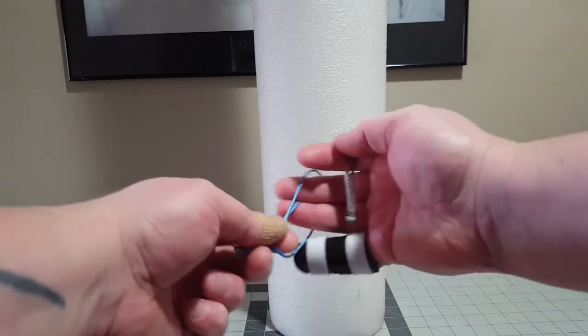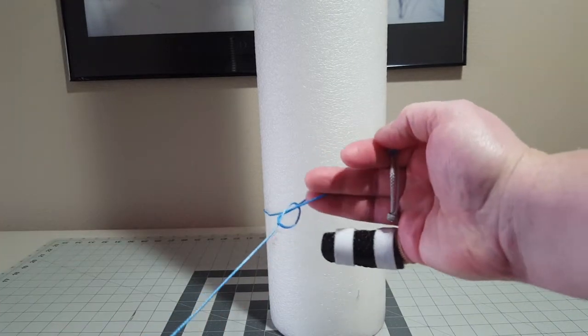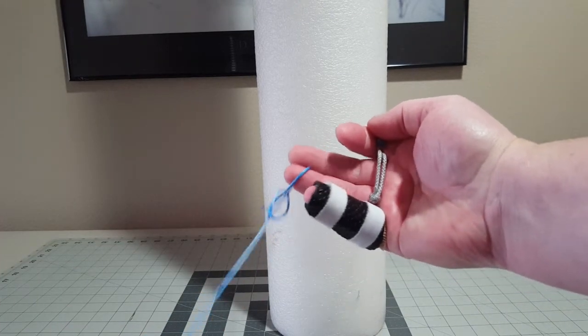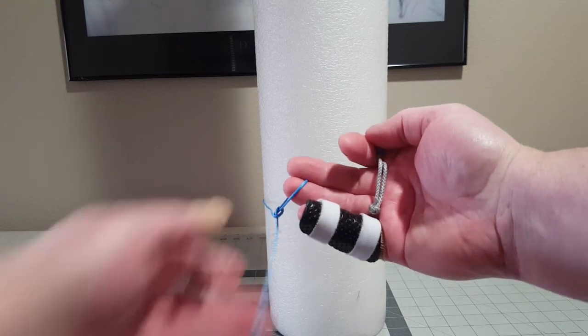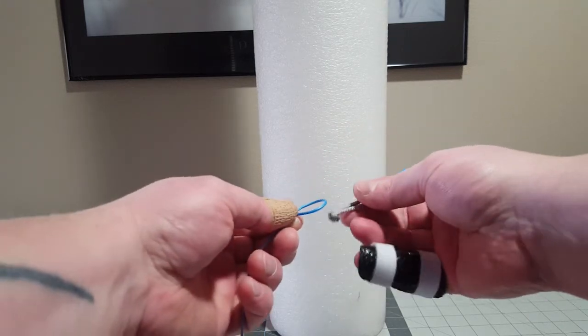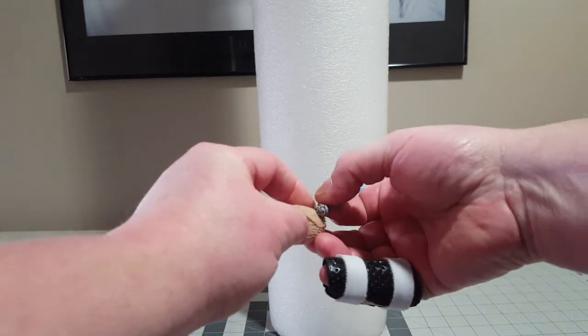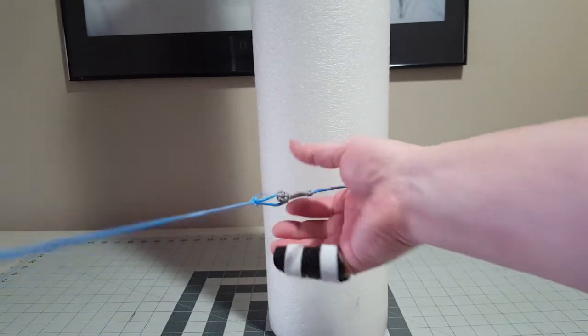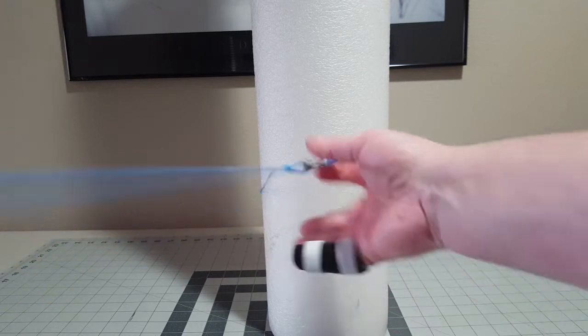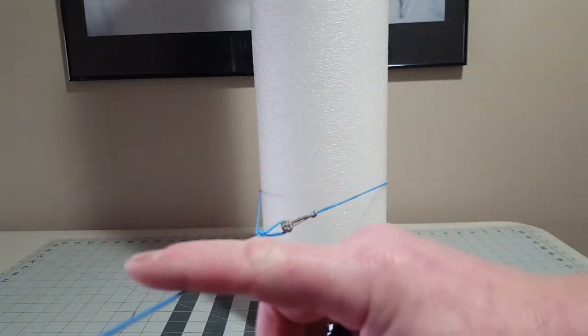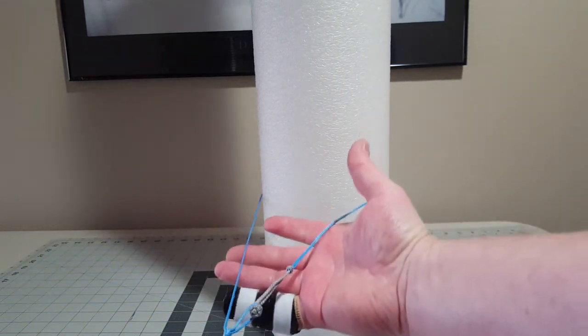Now right here in my finger I have an adjustable size loop. That adjustable size loop, I'm just gonna drop my button knot into that loop and then snug this up, and I have an instant connection that is away from the tree.